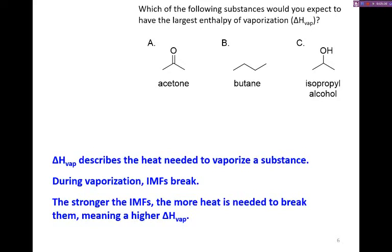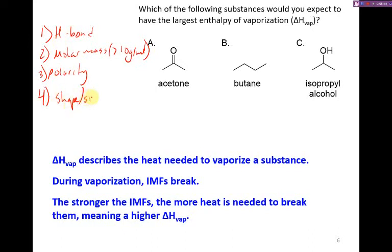So when we consider which intermolecular forces are present, remember, we first look for differences in hydrogen bonding. Then we look for differences in molar mass, looking ideally for something that's larger than 10 grams per mole different. Then we look at differences in polarity, assuming that the first two are the same. And assuming that all three of those are the same, then we look at shape and size. So hydrogen bonding. This one can do hydrogen bonding. The others cannot have hydrogen bonding. Alright. Well, now we know this one is the highest enthalpy of vaporization.